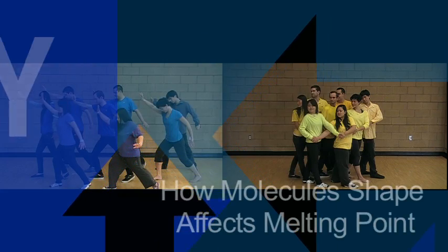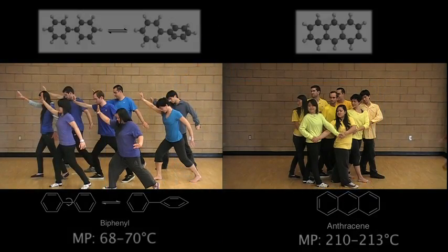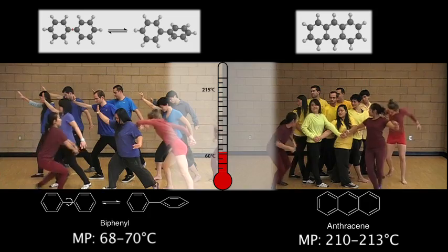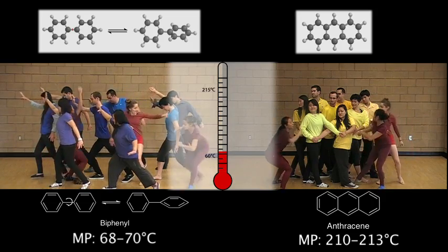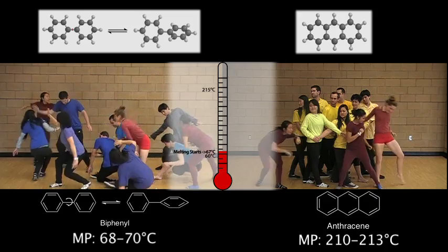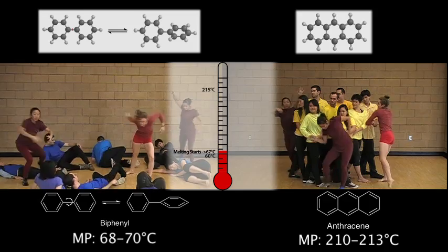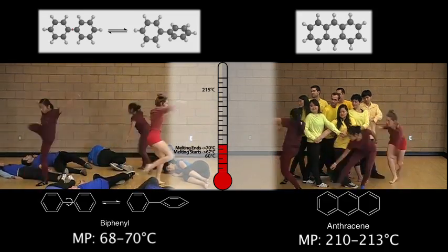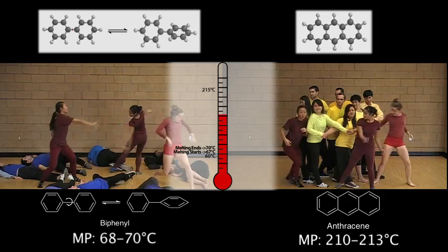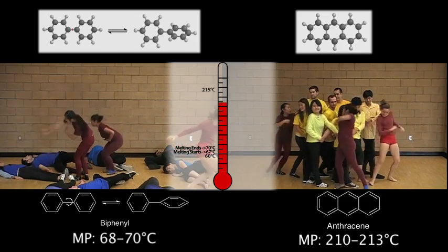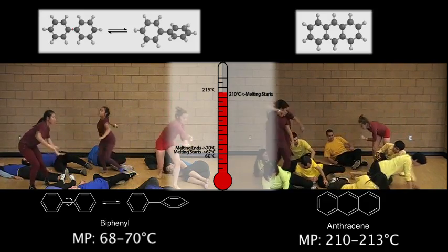Often, the melting point of a compound is influenced by the shape of the compound because it determines how well the compound stacks. If you have a very flat molecule like anthracene, it will have a higher melting point than a floppier molecule like biphenyl. Anthracene melts between 210 and 213 degrees Celsius, and biphenyl melts between 68 and 70 degrees Celsius. This is because the flatter, more constricted compound anthracene stacks better than biphenyl, which has a free carbon-carbon rotation, making it less flat and less able to stack nicely.